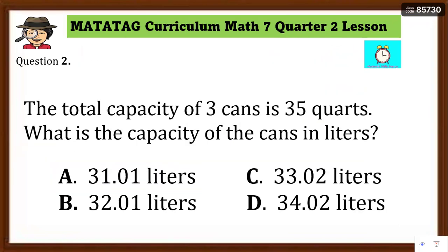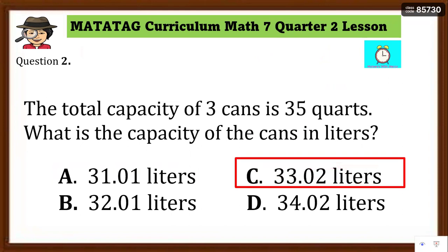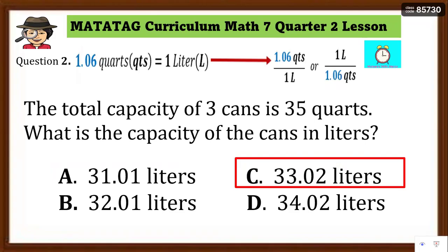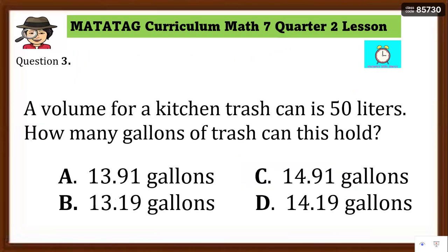Number 2: the answer is letter C, 33.02 liters, rounded to the nearest hundredths place. The problem states the total capacity of three cans is 35 quarts — convert to liters. Using the unit fraction 1 liter over 1.06 quarts, 35 divided by 1.06 gives letter C.